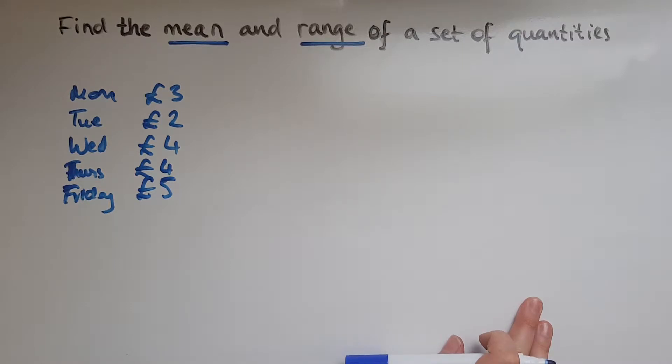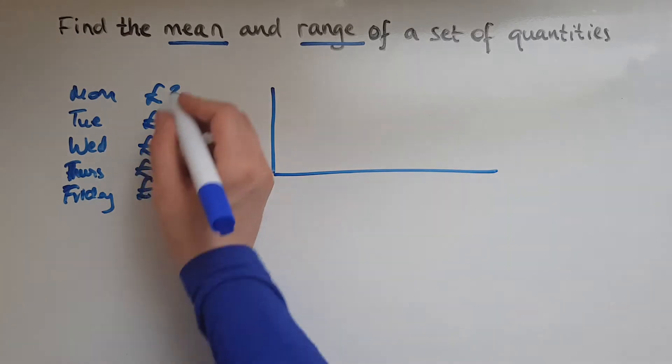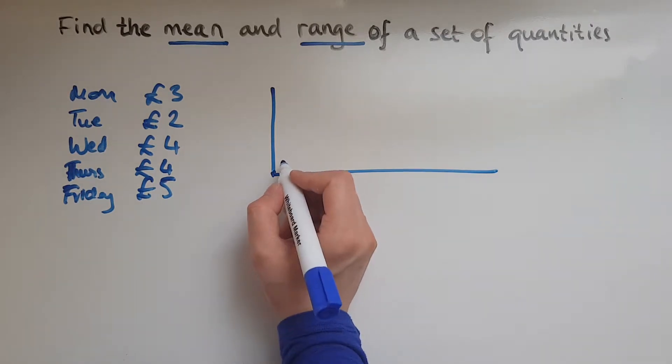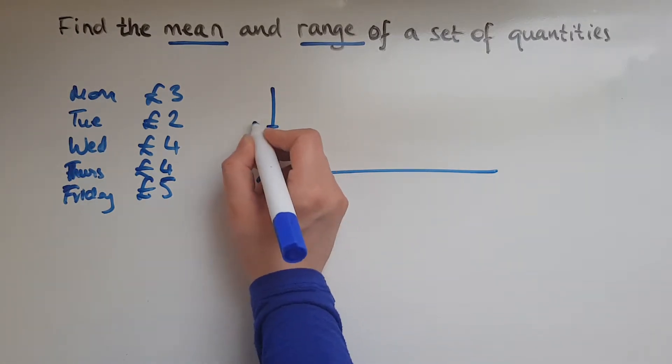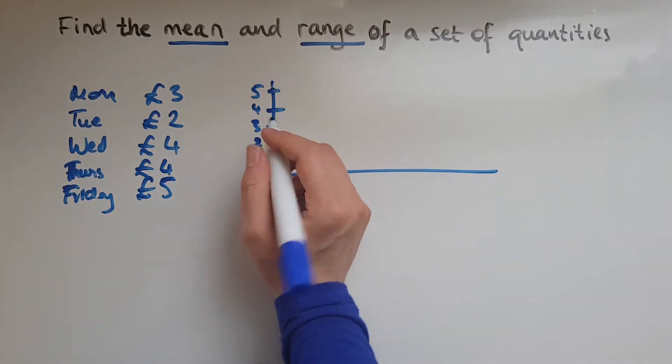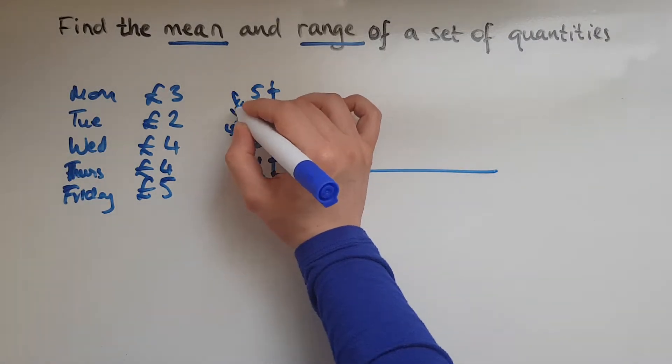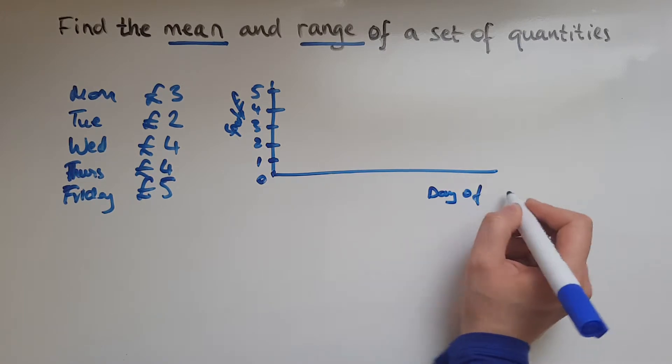So if we try and show this in a graph, the amount I'm spending each day is changing apart from Wednesday and Thursday. So there is zero, one pound, two, three, four, and the maximum is five. So spending in pounds and that's day of the week.